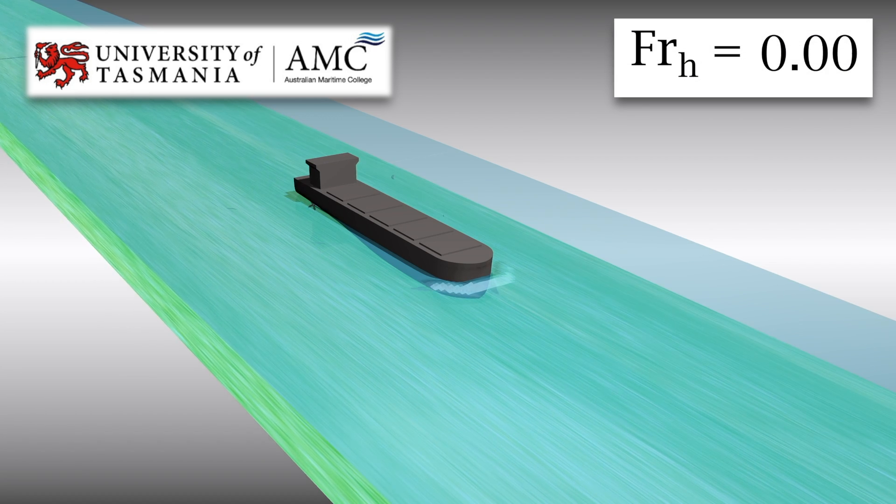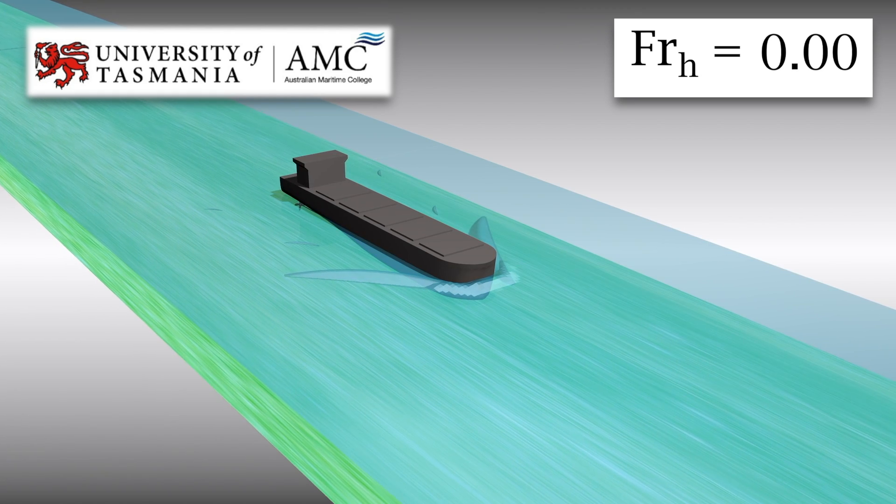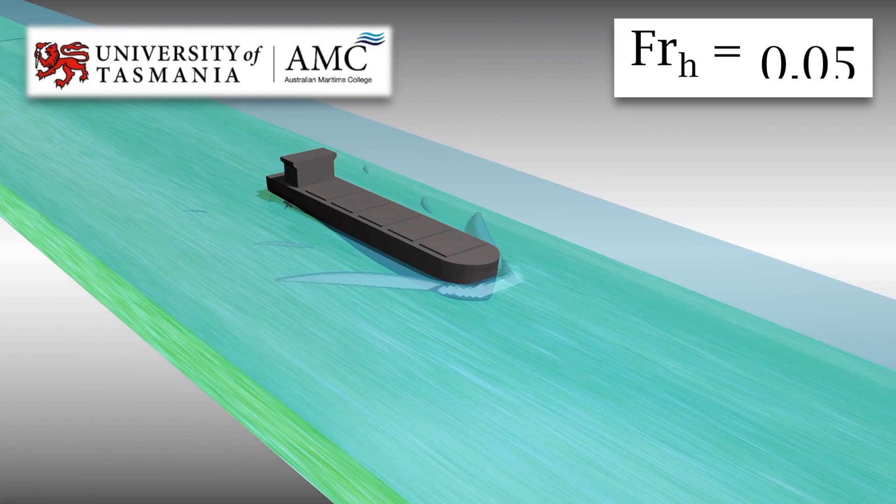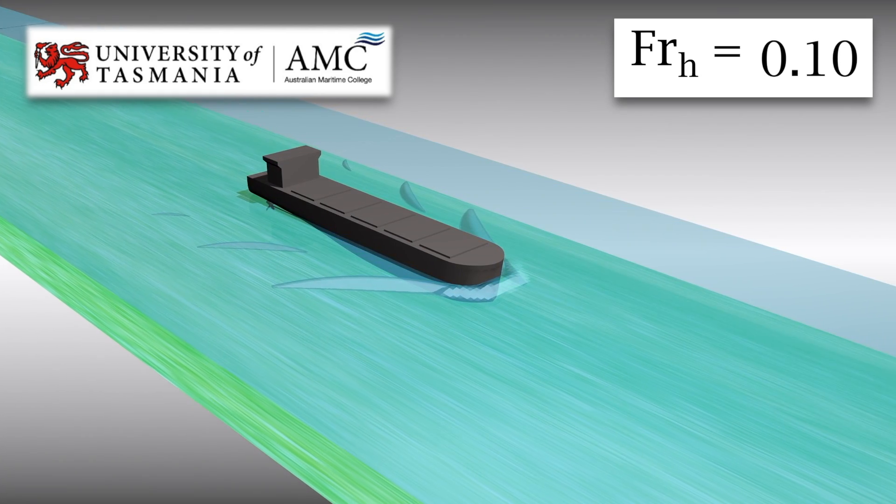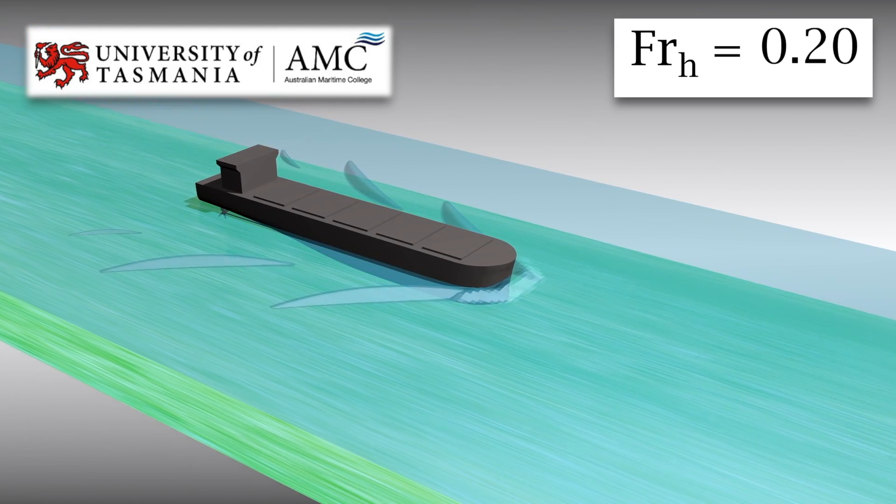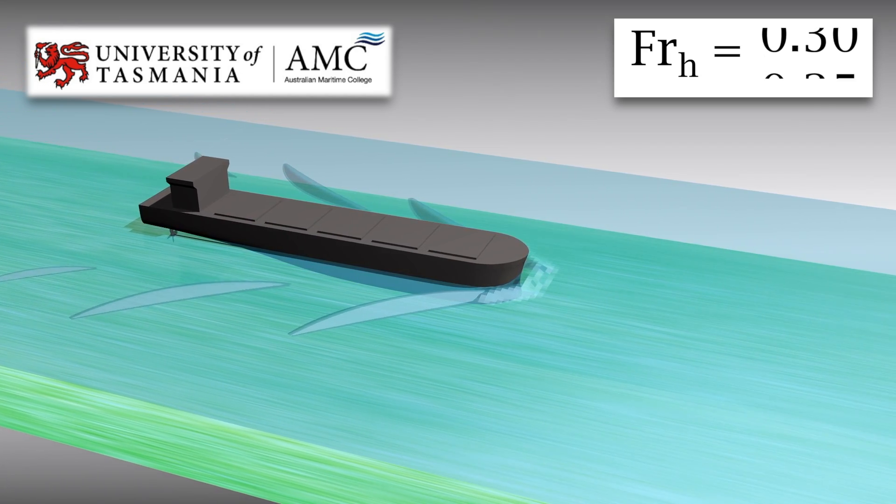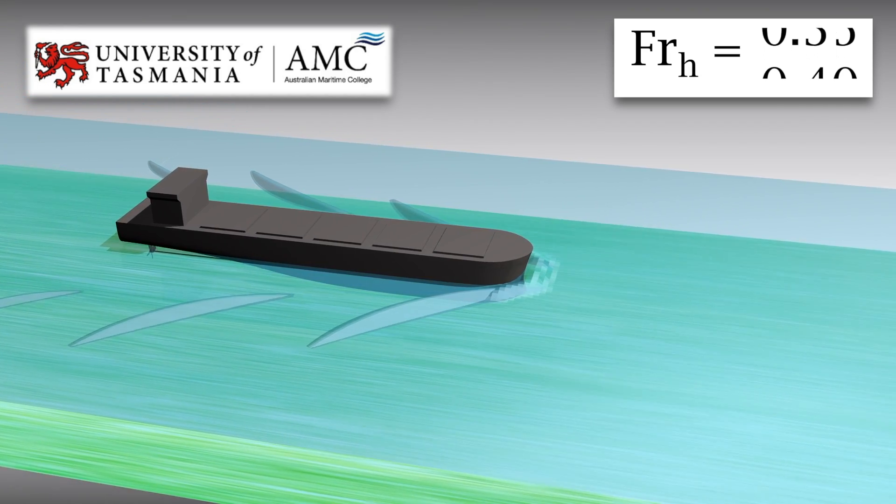A vessel operating in the subcritical Froude depth region, which is less than a Froude depth of approximately 0.7, will produce what is known as a Kelvin wake. The subcritical region is where the majority of vessels operate, as few have the power to overcome the resistance encountered in the transcritical region.